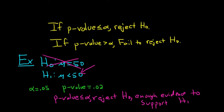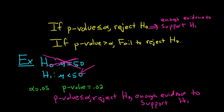So whenever you reject H₀, you have enough evidence to support H₁. When you reject H₀, this means that you support H₁ — you have sufficient evidence to support H₁.